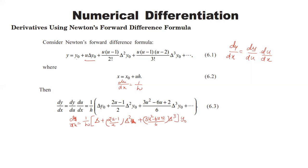So dy/dx = (1/h) times the quantity in square brackets: Δ plus (2u−1)/2 · Δ² plus (3u²−6u+2)/6 · Δ³, all applied to y0. This is what we call the differentiation formula using the Newton forward difference.